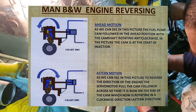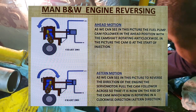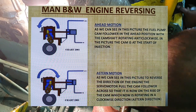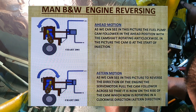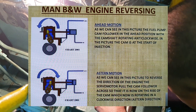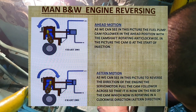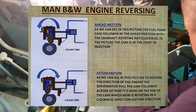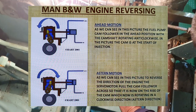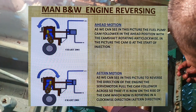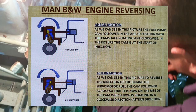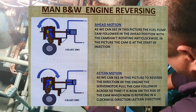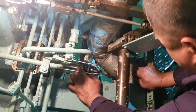Stern motion: As we can see in this picture, to reverse the direction of the engine, the servo motor pulls the pump follower across so that it is now on the rise of the cam, which is now rotating in a clockwise direction — the stern direction.